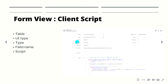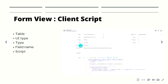Below that you can see the UI type. There are three types: desktop, mobile, and all. The most preferable way is to use 'all' so it will work on both mobile and desktop. The third field is the type, which defines the type of the client script. There are four types: onLoad, onChange, onSubmit, and onCellEdit.